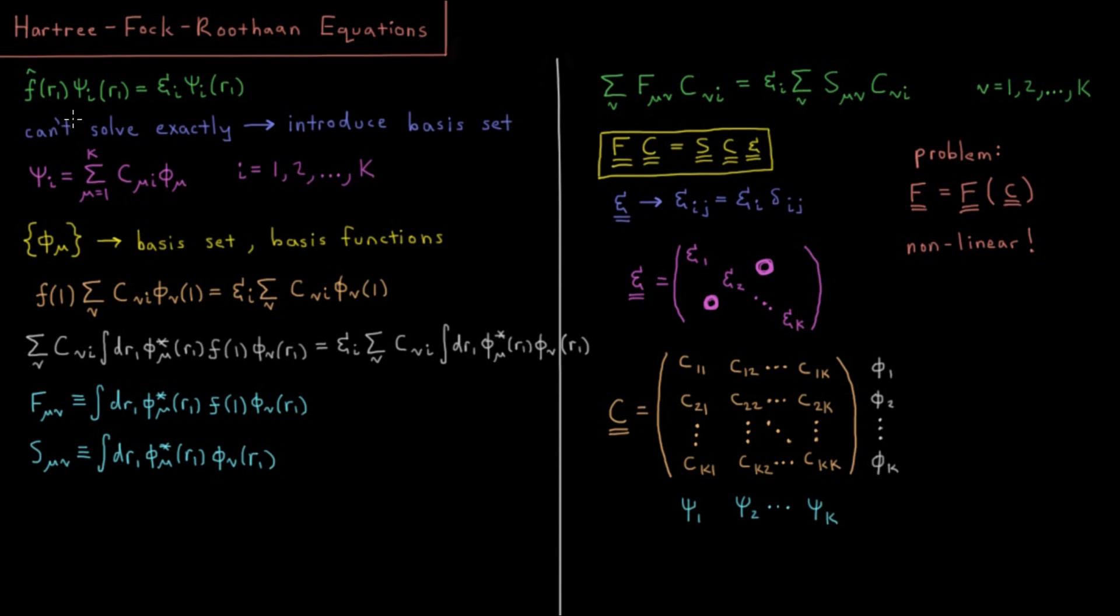Our third approximation, which finally allows us to get some traction and move forward, is that we're using a finite set of atomic orbitals as a basis set in which to expand our spin orbitals or our spatial orbitals.